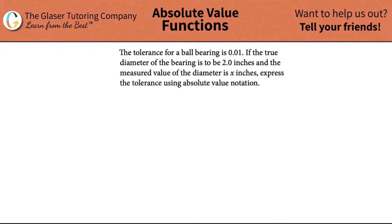The tolerance for a ball bearing is 0.01. If the true diameter of the bearing is to be 2.0 inches and the measured value of the diameter is x inches, express the tolerance using absolute value notation.